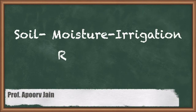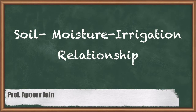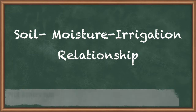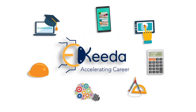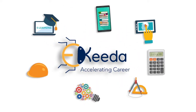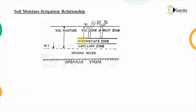Hello everyone. In this video we are going to study about the relationship between the soil moisture and the irrigation. This relationship is basically related to the amount of water that we have supplied to the field and the water that has been absorbed by the soil.